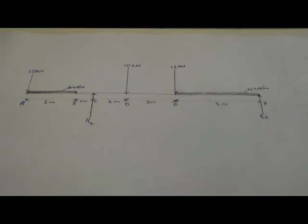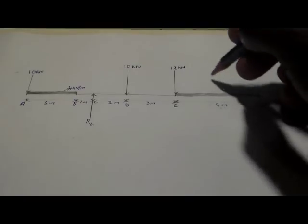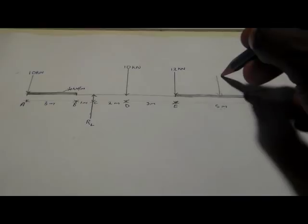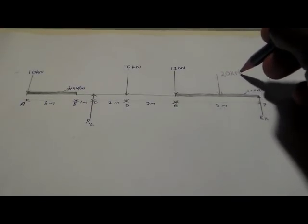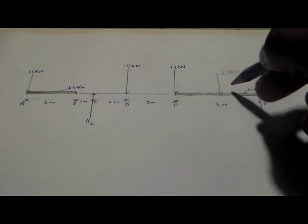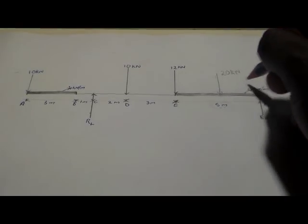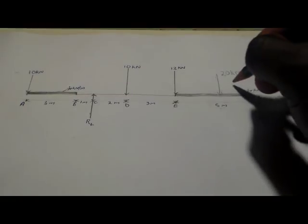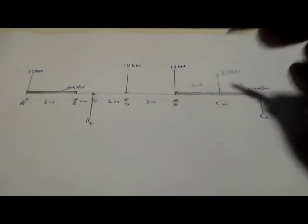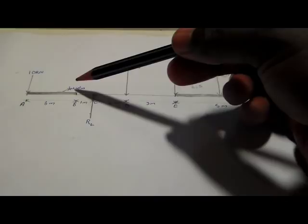The whole distance is 5 meters, so it's going to be 4 multiplied by 5, which gives 20 kilonewtons. This 20 kN acts at the middle of the 5 meters, so that's 2.5 meters from each end.